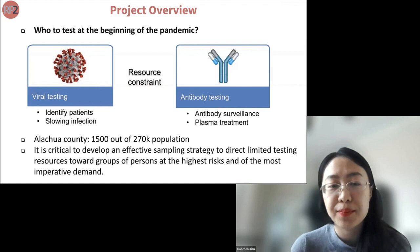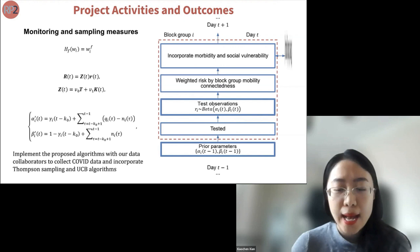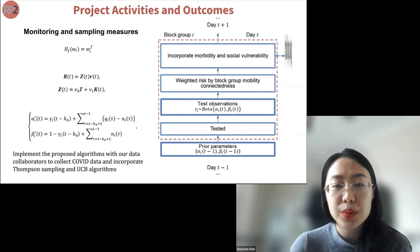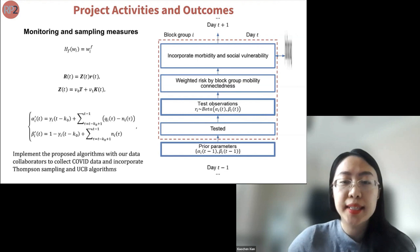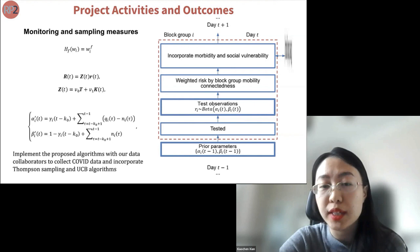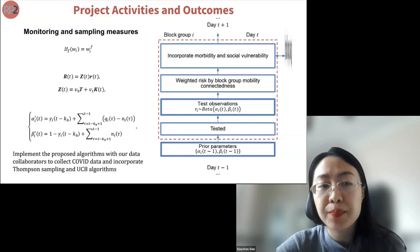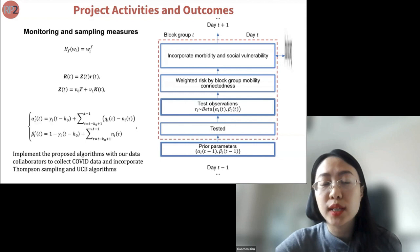This is the algorithm we developed. We use past and current testing results as a baseline and incorporate information at the block group level. We first incorporated mobility and connectedness, because mobility patterns relate to how people are exposed in different block groups. We further incorporated social vulnerability, as it relates to how serious the consequences of infection would be. We incorporate this information into a monitoring-sampling measure showing how important it is to test a given block group, and the algorithm determines whether to sample it and how many tests to assign.